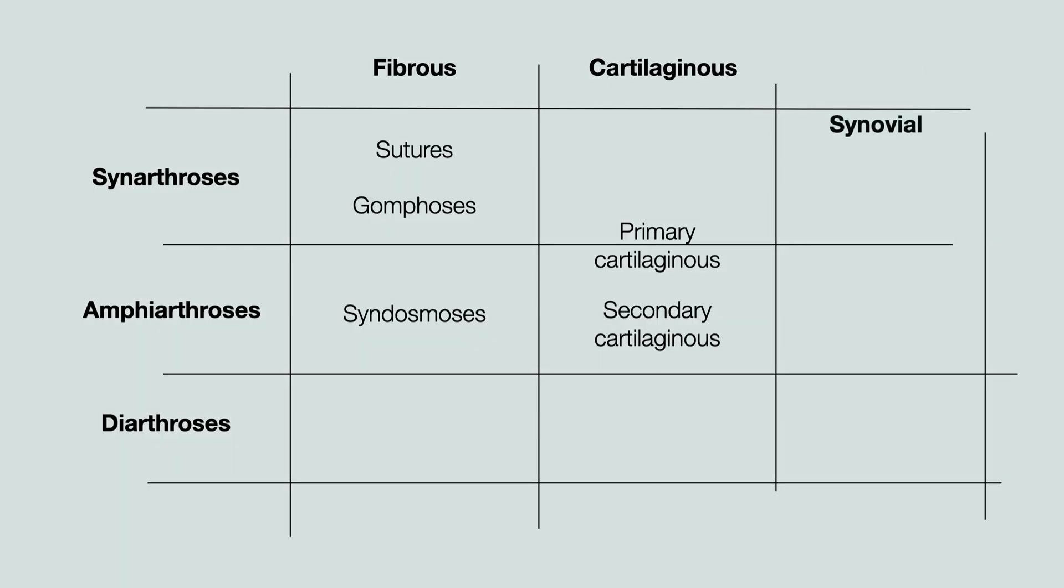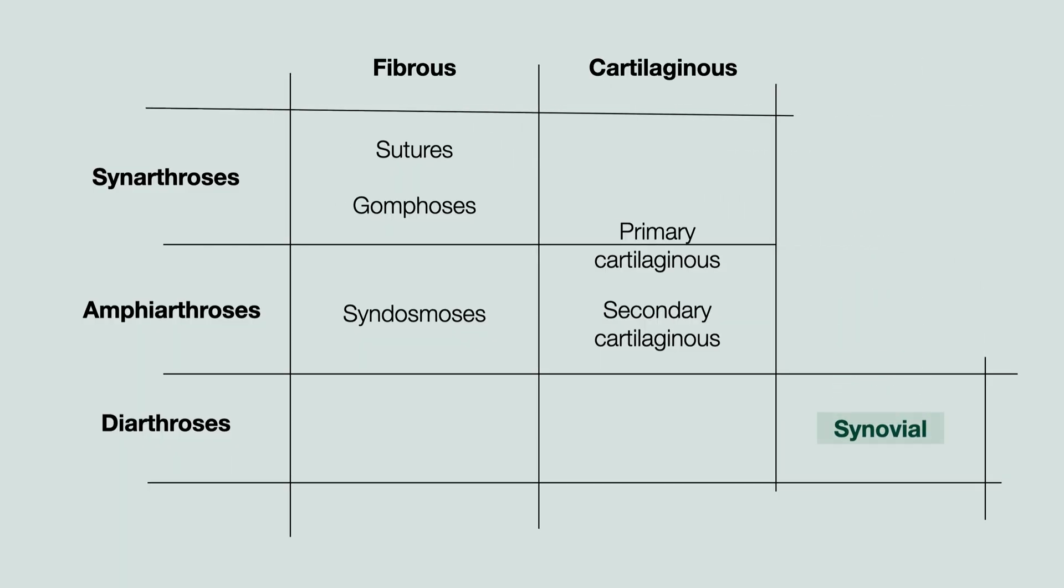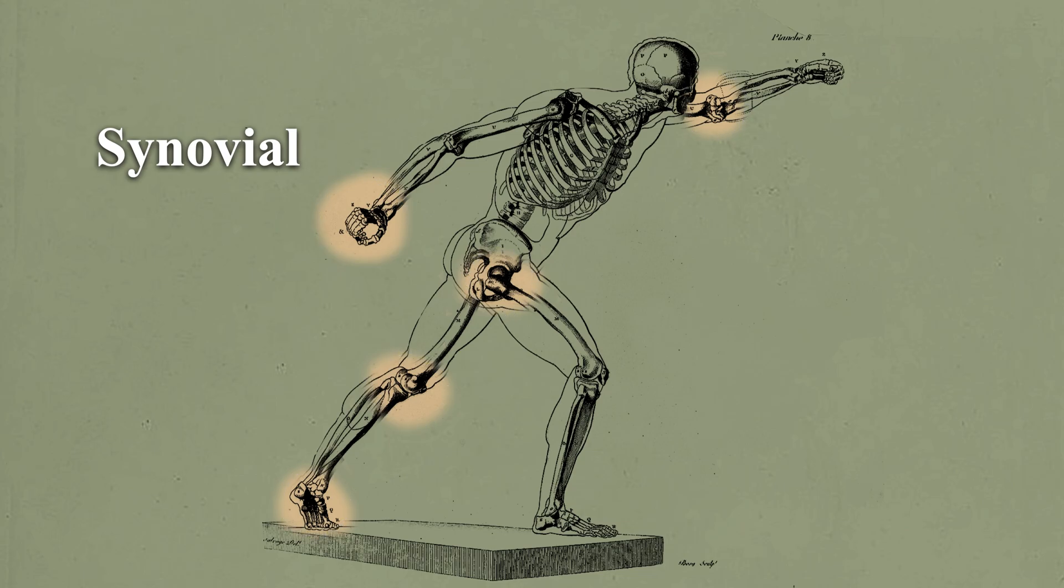Lastly, synovial joints are freely mobile joints, which are known as diarthroses and have a joint cavity. These are what one typically thinks of when referring to joints. A synovial joint contains a capsule which surrounds the joint cavity, which contains a synovial fluid secreted by the synovial membrane. The articular surface is covered by cartilage. This cartilage allows for the smooth movement of the joint and prevents the two bone ends from making direct contact and causing damage with movement.